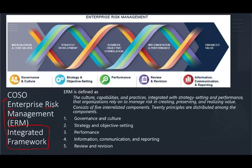Because this topic is very extensive, I'm going to break it down by its five interrelated components, covering each one separately. Within those five interrelated components, we're going to have 20 principles. In this session, we'll cover the governance and culture component, which has five principles. In the next session, we'll look at strategy and objective setting, which has four principles, and so on.